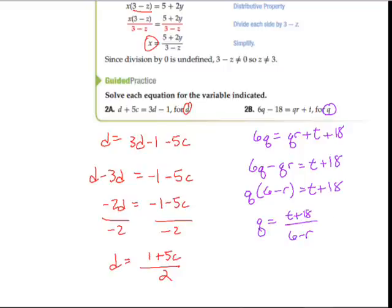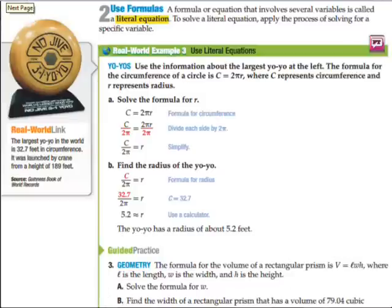Let's take a look at the next page. A formula or equation that involves several variables is referred to as a literal equation. So lots of variables, more than one variable, several, or a formula or equation that's called a literal equation. To solve a literal equation, you apply the process of solving for a specific variable. This is the same exact stuff, except for now we're going to look at formulas that you know, like circumference.